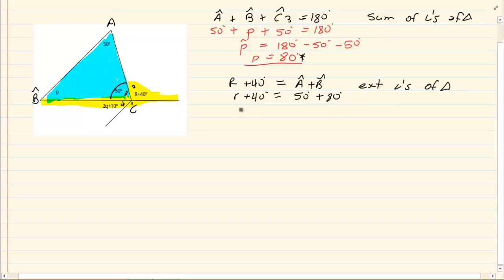So, that means R plus 40 is going to equal to 130 degrees. R is going to equal to 130 minus 40 degrees, which means R is equal to 90 degrees.